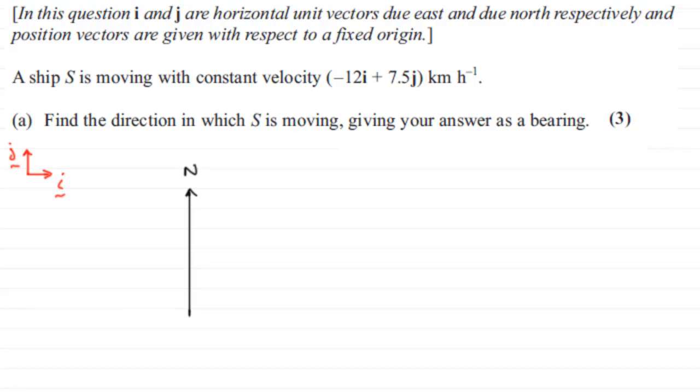So with this, we've got the ship S moving with a constant velocity of -12i + 7.5j. What that means is that we move 12 units to the left because we've got -12i, and 7.5 units in the positive J sense, and these are the components of the vector that describes the movement of the ship S.